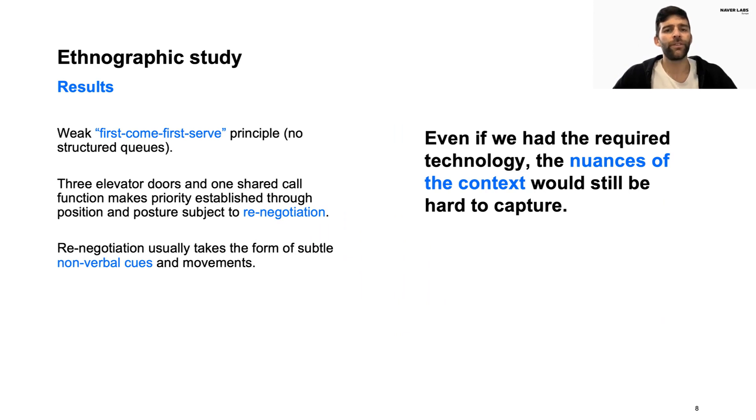From the ethnographic study we understood that people do not form structured queues, but rather follow a weak first-come, first-served principle. In a setting with multiple elevators, like the one we observed, priorities established through position and posture may be subject to renegotiation through the use of non-verbal cues. Based on this, we concluded that even if we had the required situation modeling technology, the nuances of the context would still be hard to capture. In fact, the intention of people was not always clear even for the human observers.